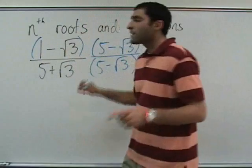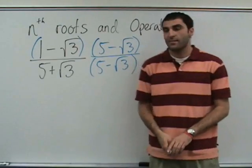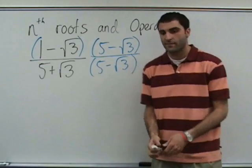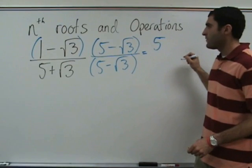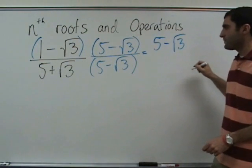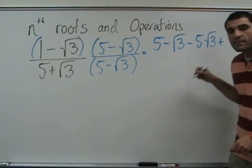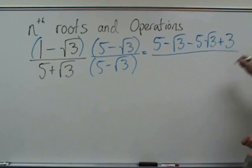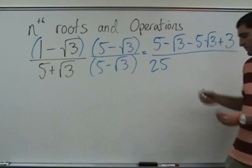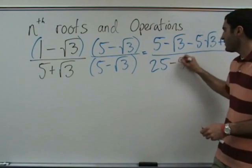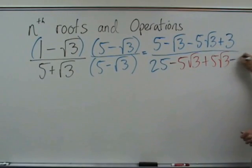Following the rules we did last time. Let's FOIL the top and bottom. Top: 5, minus 1 root 3, minus 5 root 3, plus root 9 — which is 3. Over: 25, minus 5 root 3, plus 5 root 3, minus 3.